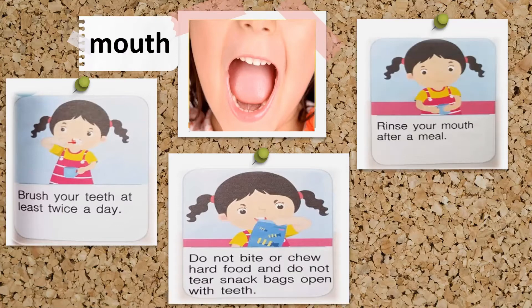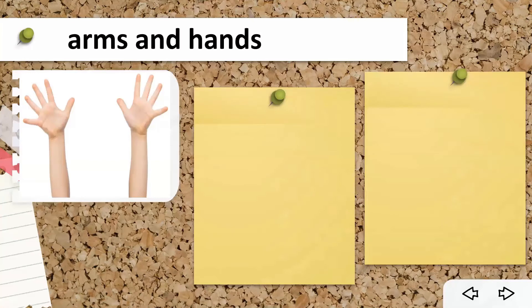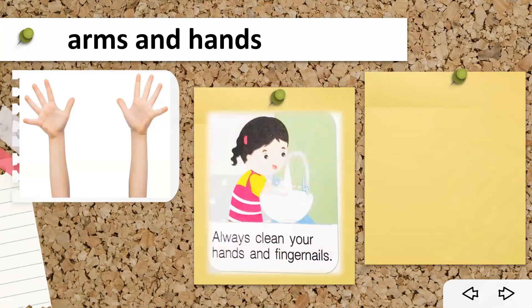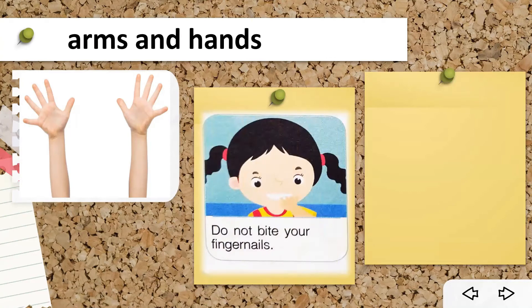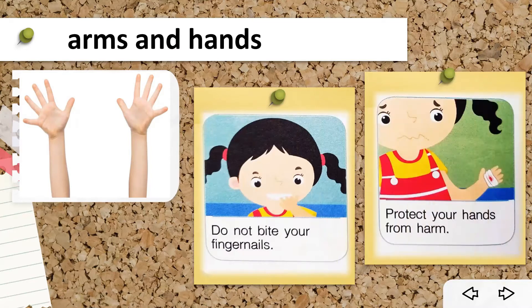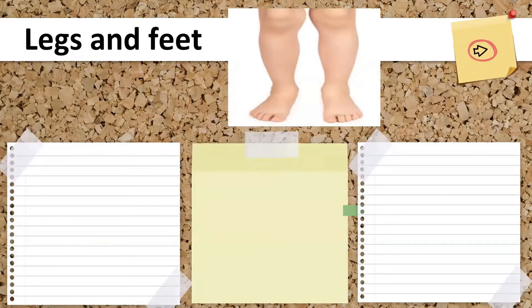How do we protect our arms and hands? Always wash your hands with soap and clean water, and keep your fingernails short — cut them with a nail cutter gently, or with the guidance of your parents. Do not bite your fingernails, because there are bacteria on your nails. Also, protect your hands from harm and do not touch sharp objects.